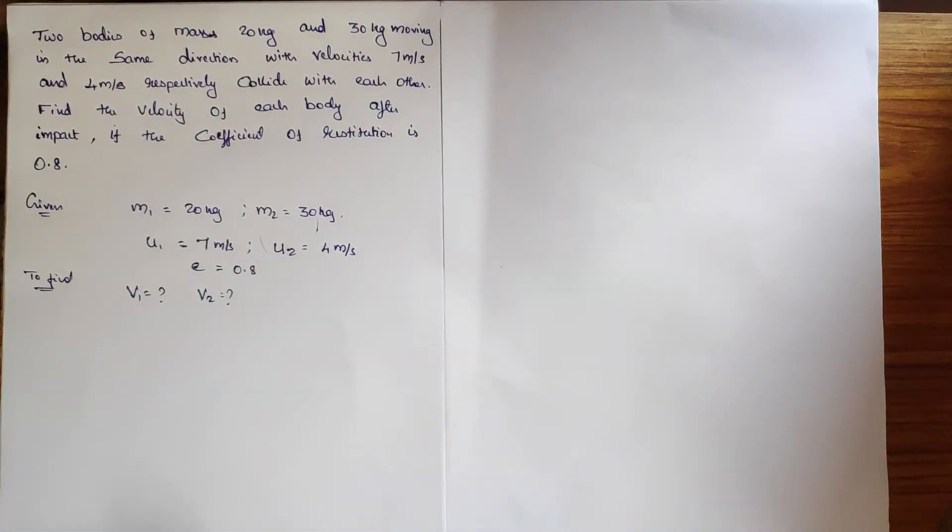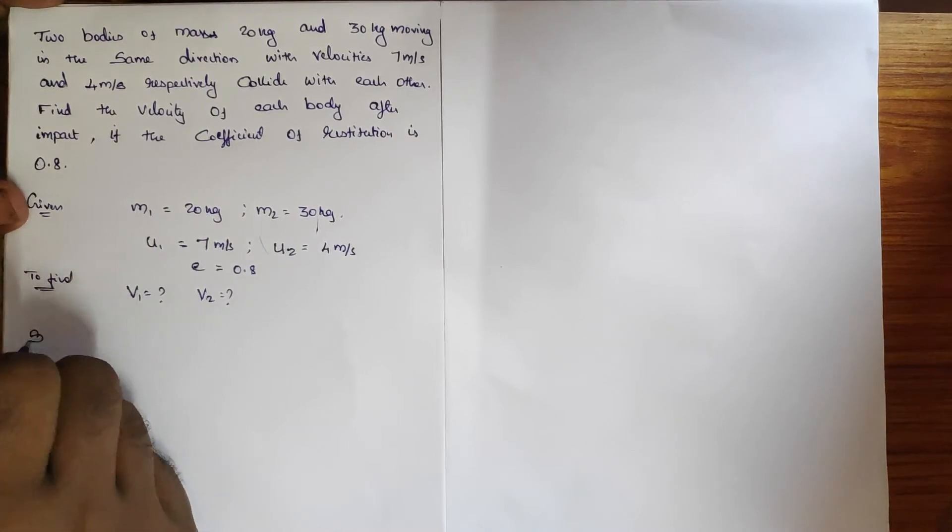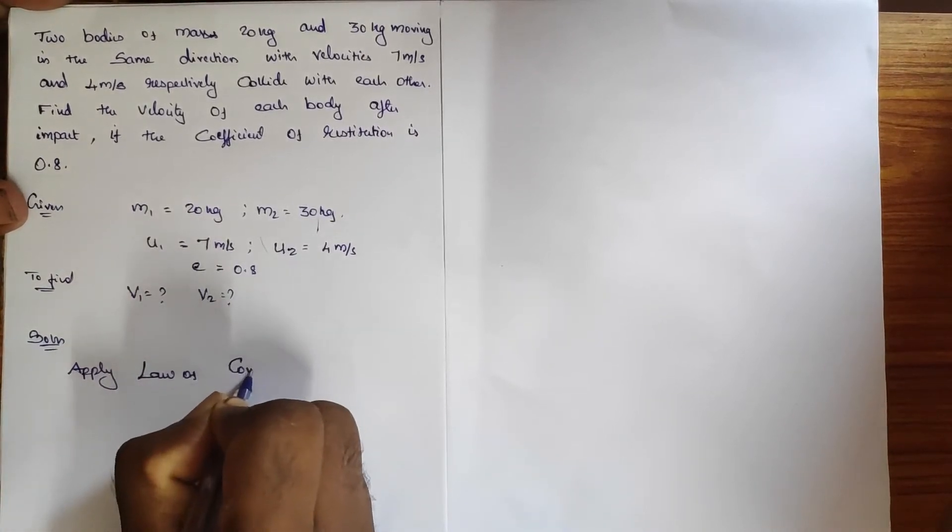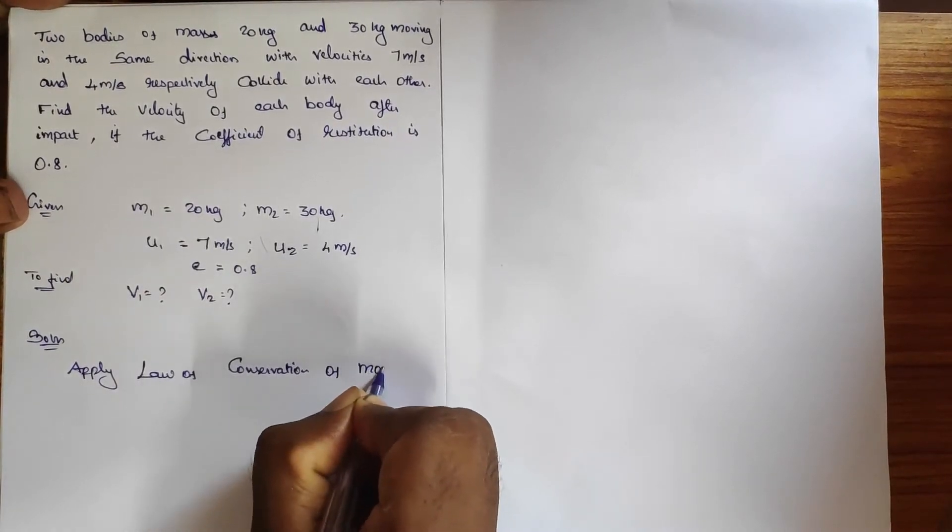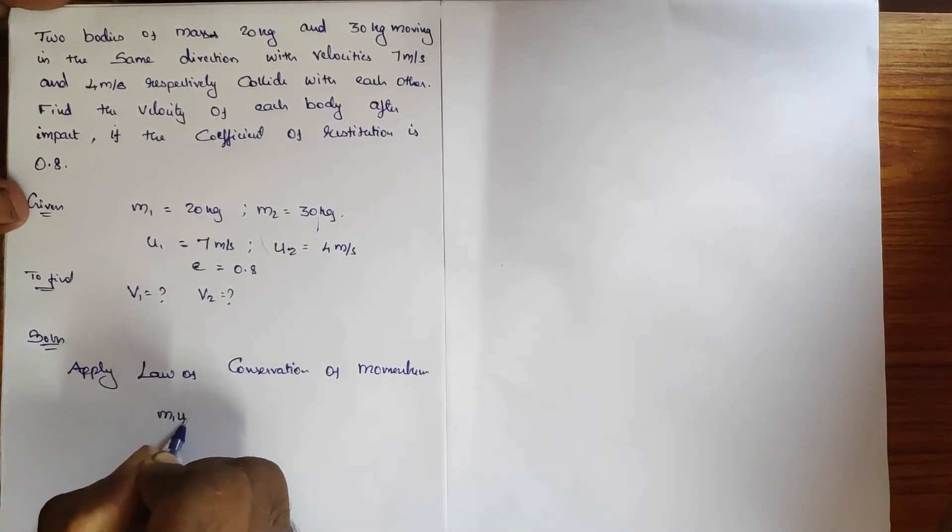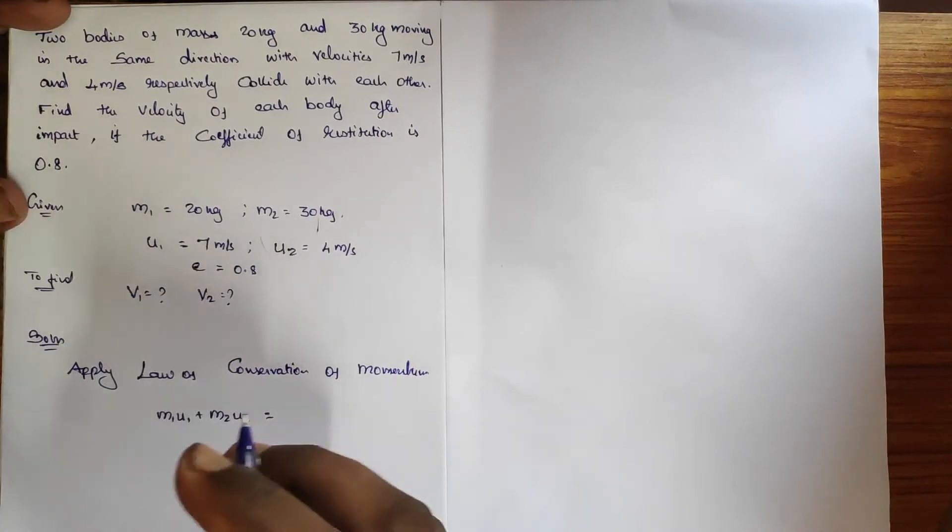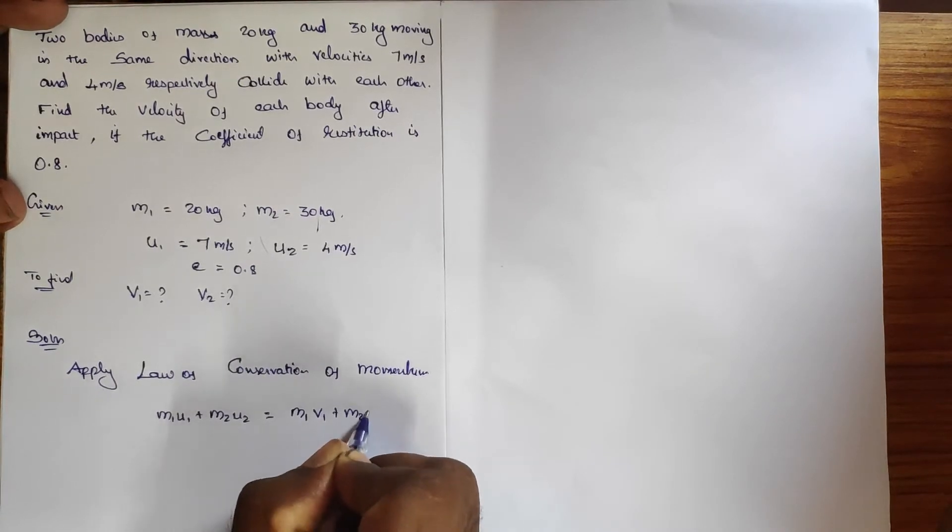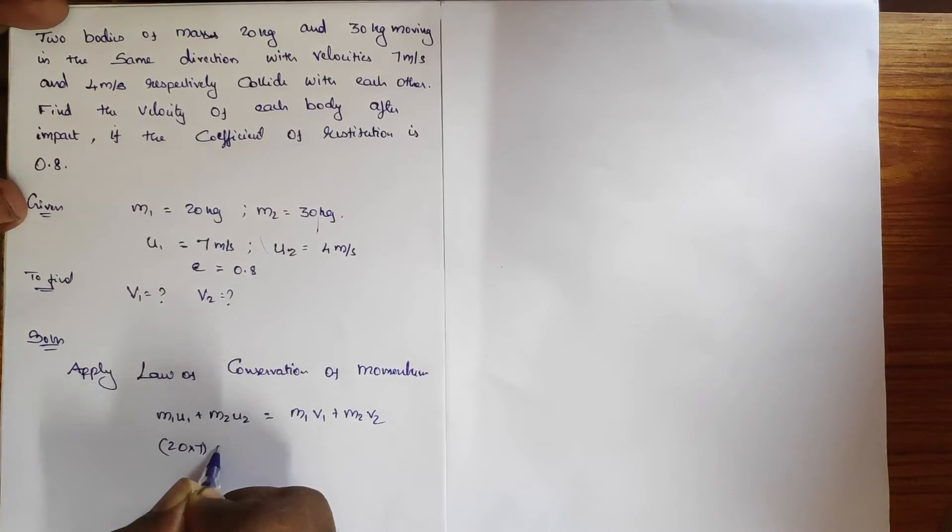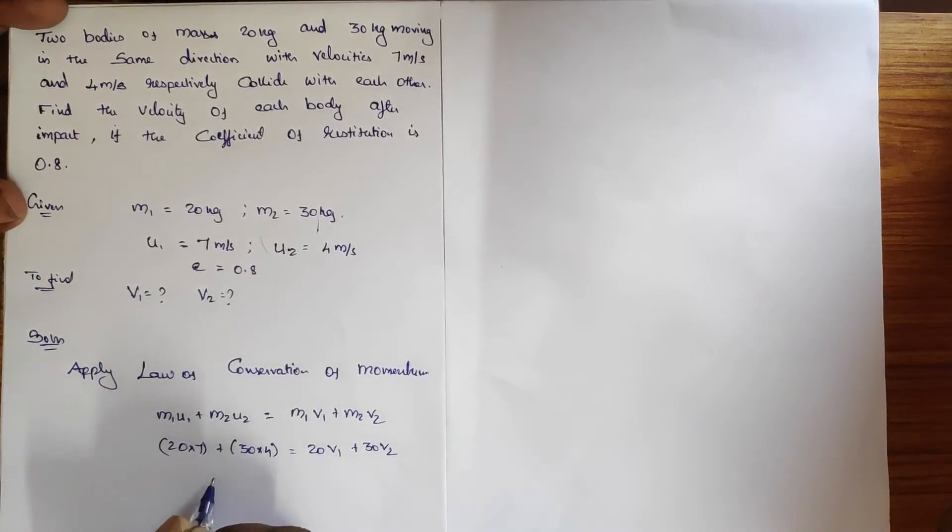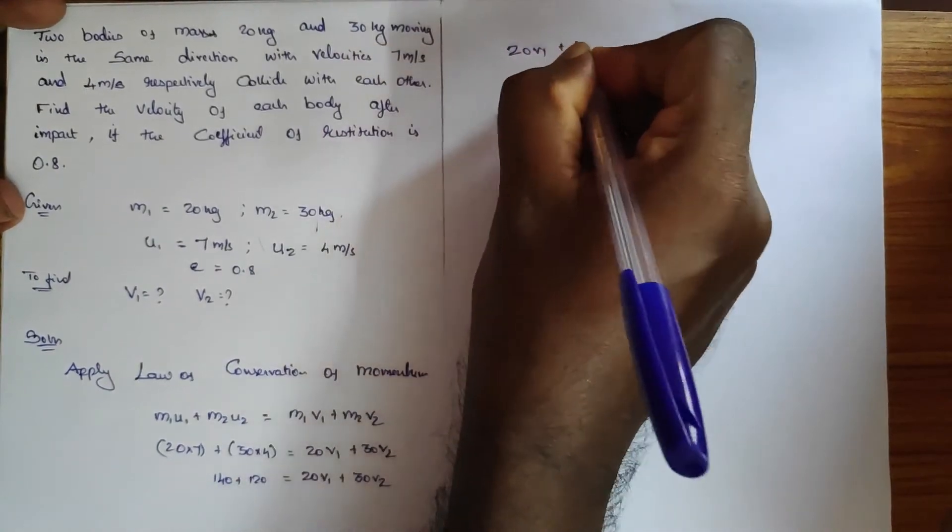Solution: I'm going to apply the law of conservation of momentum. When I apply it, m1 u1 plus m2 u2, that means total momentum before collision, is equal to total momentum after collision, m1 v1 plus m2 v2. So here 20 into 7 plus 30 into 4 equals 20 v1 plus 30 v2. We will get 140 plus 120 equals 20 v1 plus 30 v2.